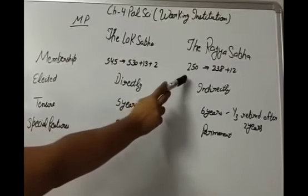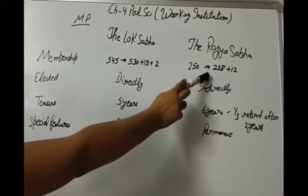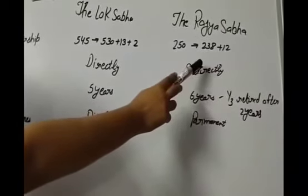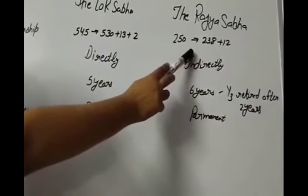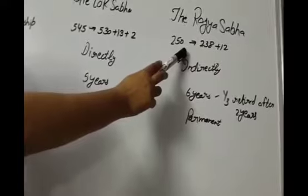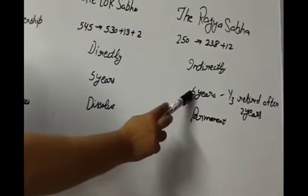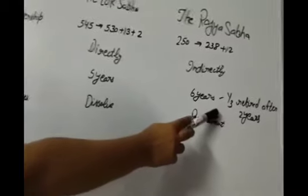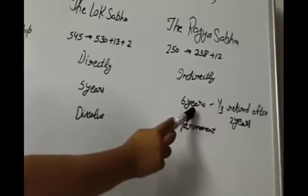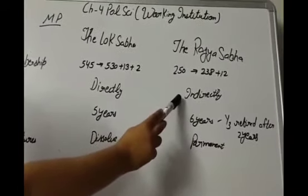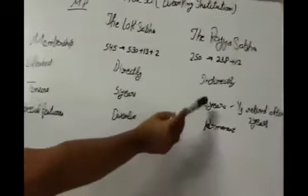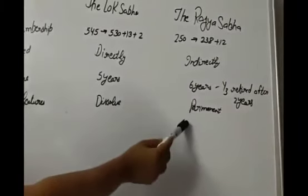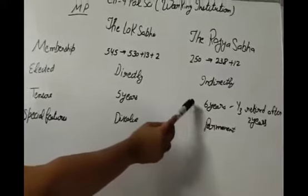The Rajya Sabha has 250 members: 238 elected from the states and the union territories and 12 are nominated by the President. And they are the persons who have the highest rank from the field of Literature, Art, Science, and Social Service. And they are nominated for 6 years. Because they have the provision that one-third members of the Rajya Sabha retire after every 2 years, and new members are appointed in their place. And these members are indirectly elected from the state legislative assemblies. And they are not totally dissolved. Their one-third is retired after 2 years, so that's why they are known as a permanent house. And the Vice President presides over the meeting of the Rajya Sabha.